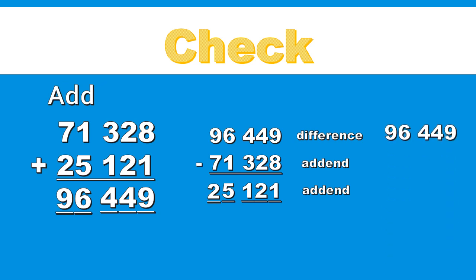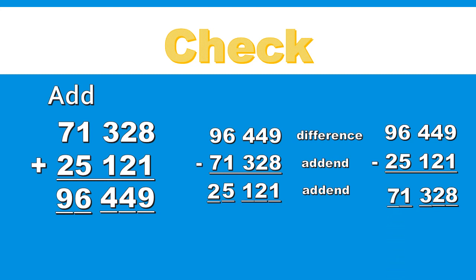Or take a look at this. Our sum is 96,449. This time we are going to use our bottom addend, 25,121. Let's go ahead and see if we will get back our top addend. 1 one from 9 ones leaves 8 ones. 2 tens from 4 tens leaves 2 tens. 1 hundred from 4 hundred leaves 3 hundred. 5 thousand from 6 thousand leaves 1 thousand. 2 ten-thousands from 9 ten-thousands leaves 7 ten-thousands. So we got back our top addend, 71,328. So therefore we know that our sum is correct.